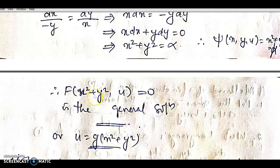So the general solution is f(x² + y², u) = 0, which can be written as u = g(x² + y²).